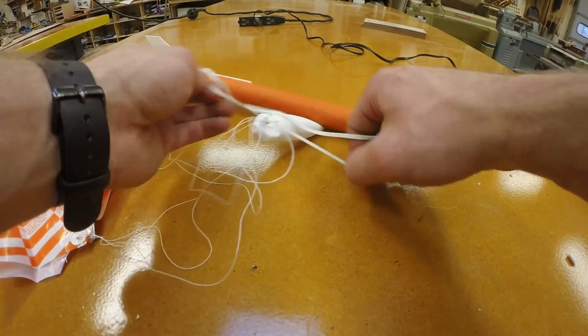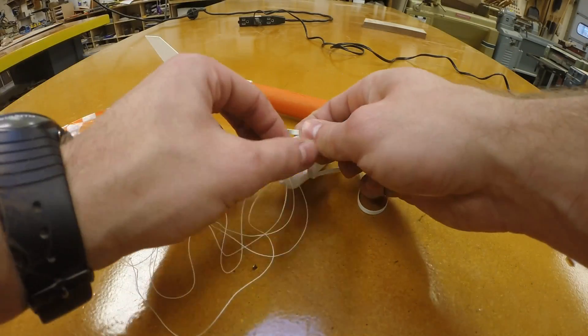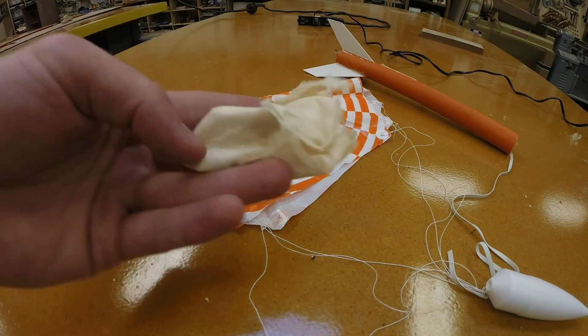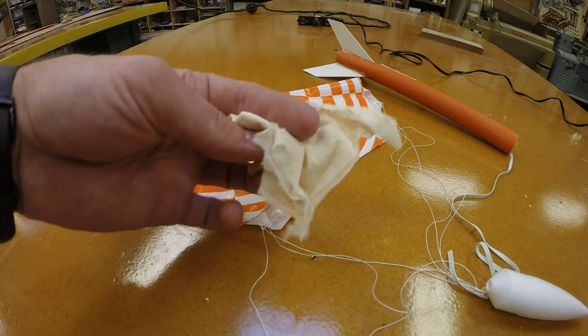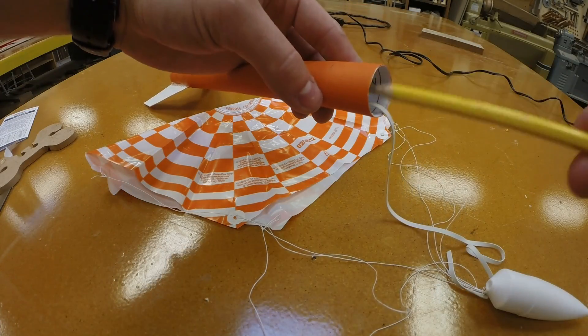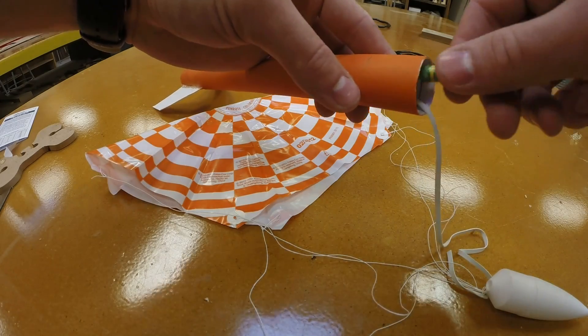Now you're going to tie the free end of the shock cord through the same eyelet and you might want to double knot that so that it will stay real tight. Before we compact the parachute we need to stuff some recovery wadding down into the top of the rocket. This is going to stop the engine from burning up the parachute during flight.